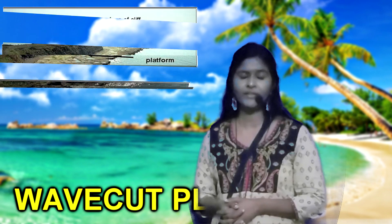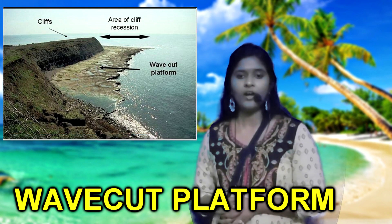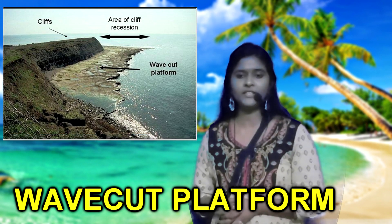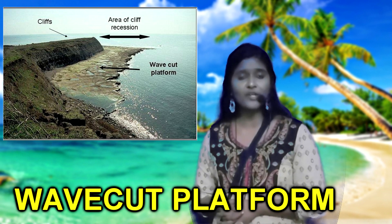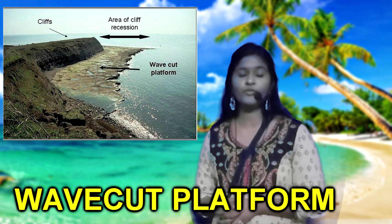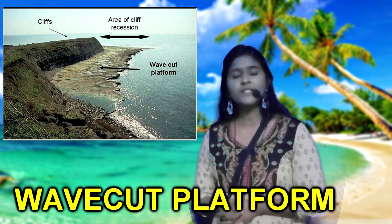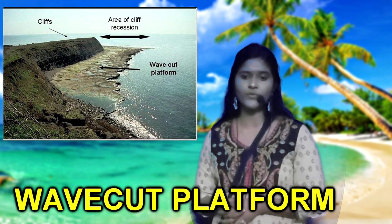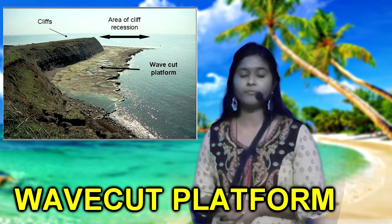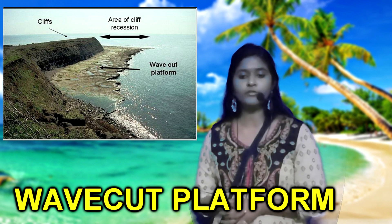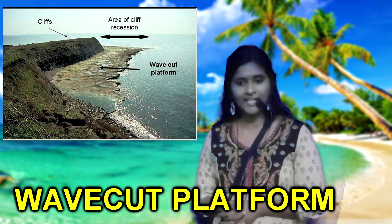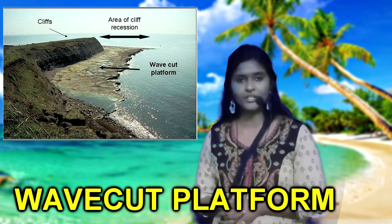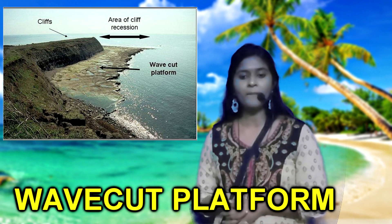The next erosional feature found in Kerala coast is the wave-cut platform. It is a bench-like or narrow flat area found at the base of a sea cliff or the shoreline. Extensive wave-cut platforms are absent in Kerala coast, but minor wave-cut platforms are found in Kovalam, Varkala, Thalesheri, Dharmadam, Mahi, Elimala, and Bekal.